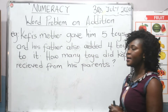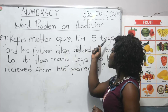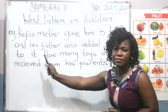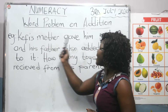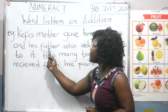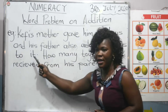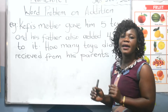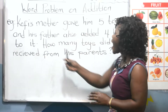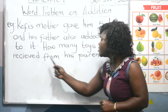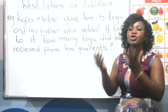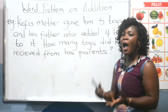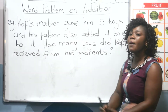Now let's look at this example. Kofi's mother gave him five toys, and his father also added four toys to it. It means Kofi's mother has given Kofi five toys, then his father also added four toys to Kofi. So how many toys did Kofi receive from his parents? So in all, how many toys did Kofi receive from his parents? So now we are coming to calculate the toys.